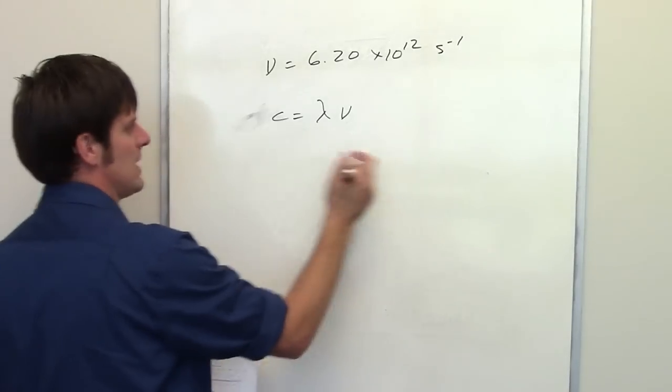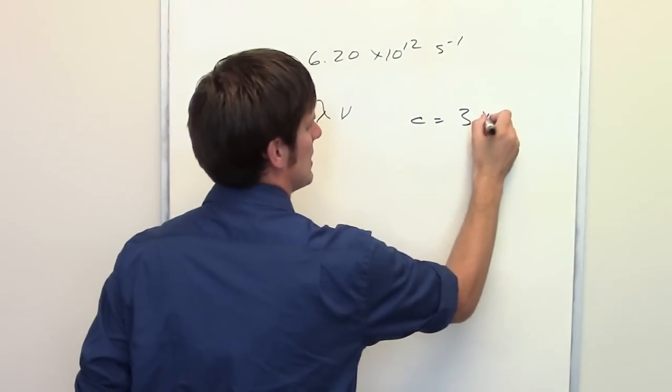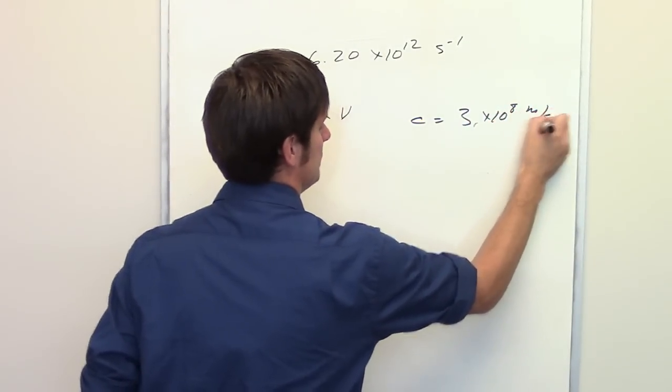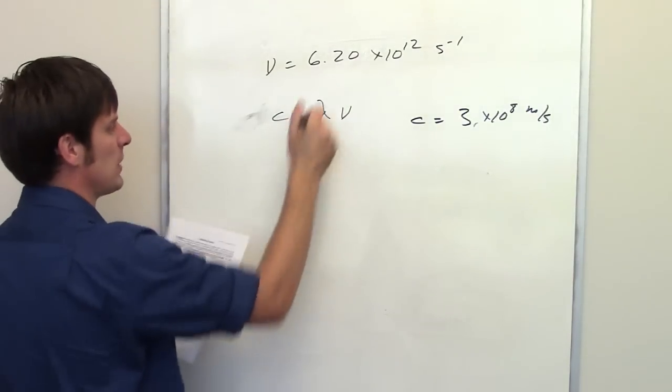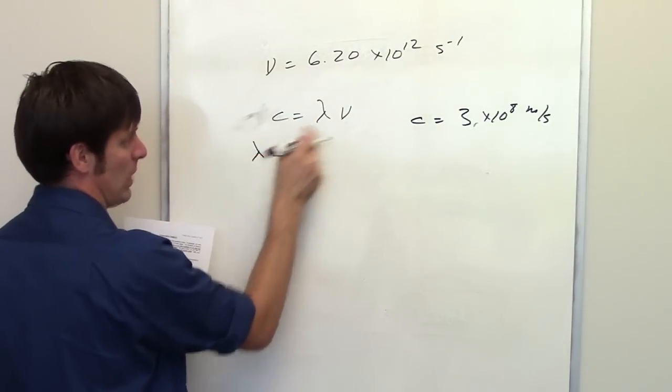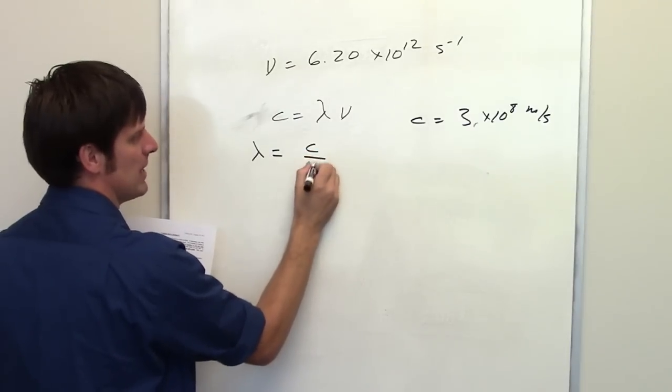We know what C is. It's the speed of light, 3 times 10 to the eighth meters per second. In this particular case, we've been given a frequency and we're asked to calculate the wavelength. Wavelength algebraically is going to be equal to C divided by nu.